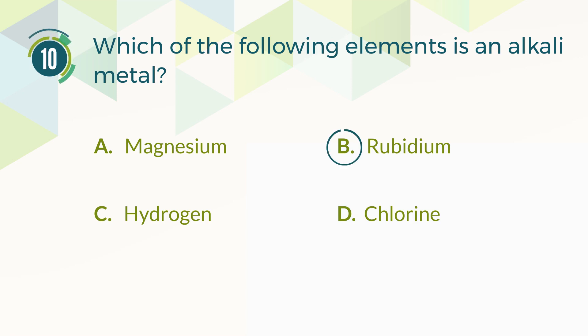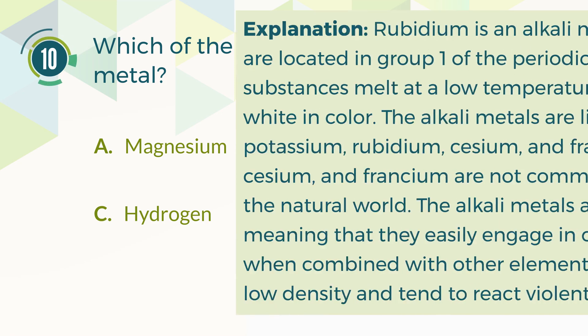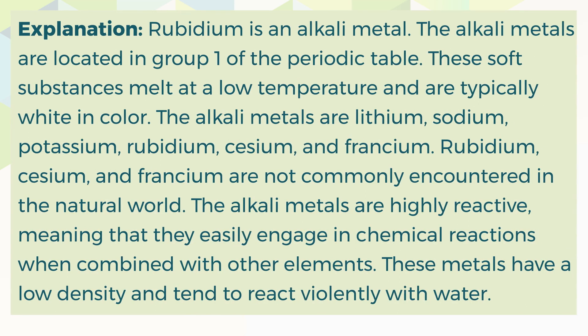The correct answer is B, rubidium. Rubidium is an alkali metal. The alkali metals are located in group 1 of the periodic table. These soft substances melt at a low temperature and are typically white in color. The alkali metals are lithium, sodium, potassium, rubidium, cesium, and francium. Rubidium, cesium, and francium are not commonly encountered in the natural world. The alkali metals are highly reactive, meaning they easily engage in chemical reactions when combined with other elements. These metals have a low density and tend to react violently with water.